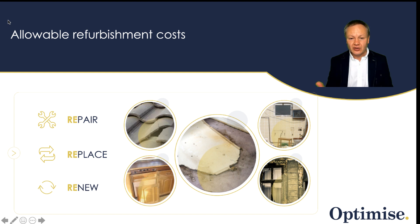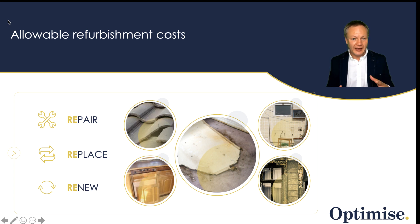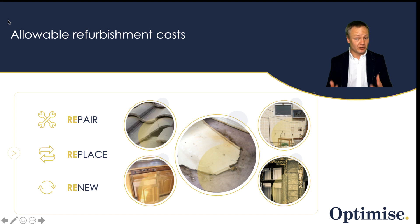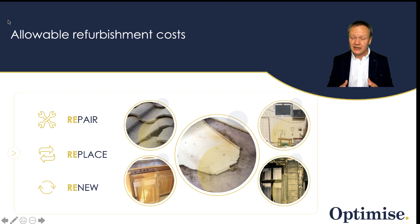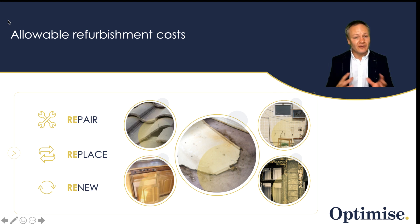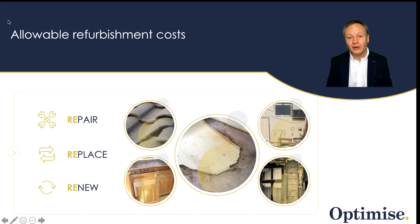I use three words to talk about refurbishments, and this really is paramount. The first is repair. So if you're repairing a roof tile that you have seen is broken, then that cost will be allowable to offset against your property income. Additionally, if you are replacing items — so you're replacing a kitchen suite or a bathroom suite — then those are like-for-like replacements and therefore also will be allowed to be offset against your property income.